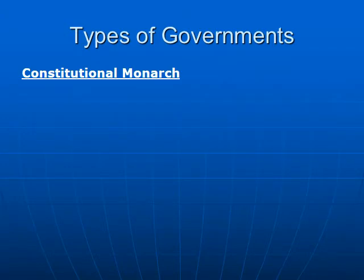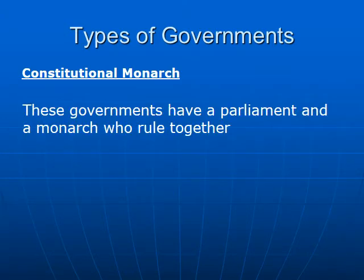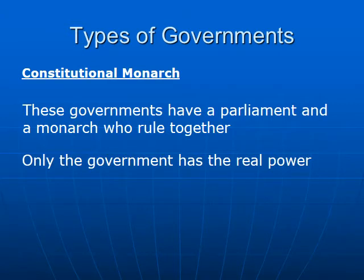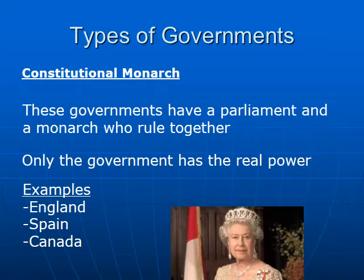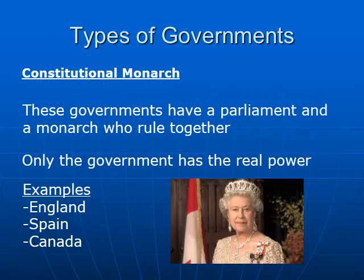Next we're going to look at the constitutional monarchy. These governments have parliaments and a monarch who rule together. However, the government is the only real body that has any power. Examples are England, Spain, and Canada.